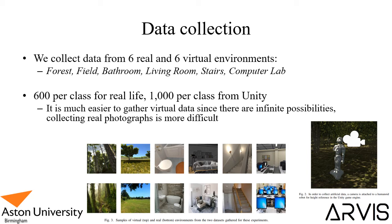At the bottom there's an example of the six environments. The top row shows images from the Unity game engine dataset, and the bottom row shows those same classes from real-world photographs. The image on the right shows how we actually gather the data: we take a humanoid robot 3D model, set it to human height, attach a camera to the front set to the same focal length as the human eye, then have the robot rotate, look up and down, take photographs, and travel through the environment.